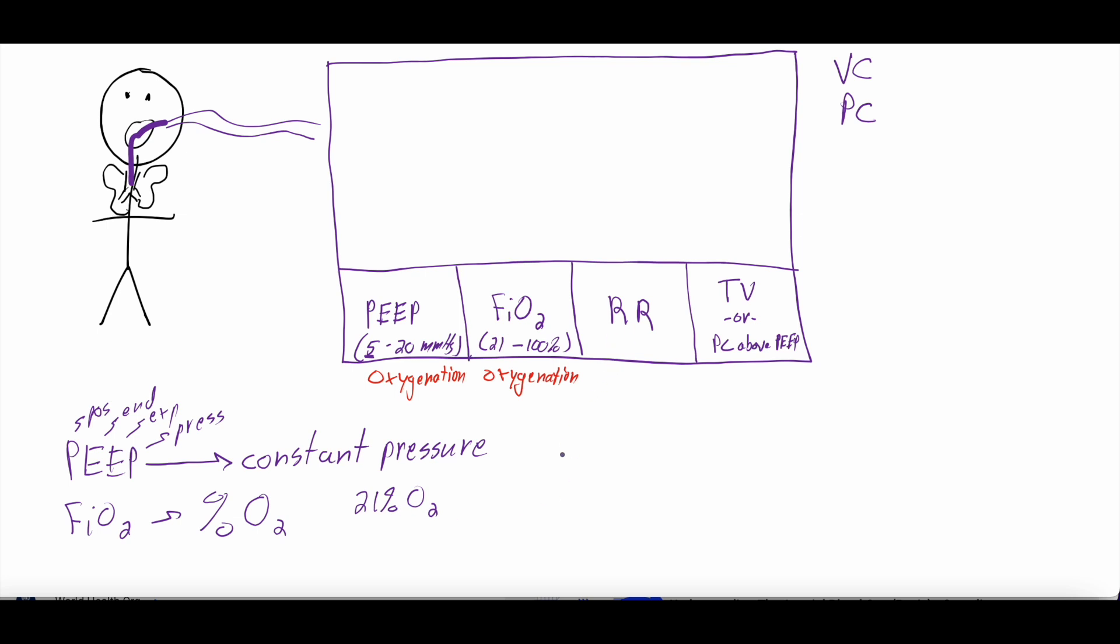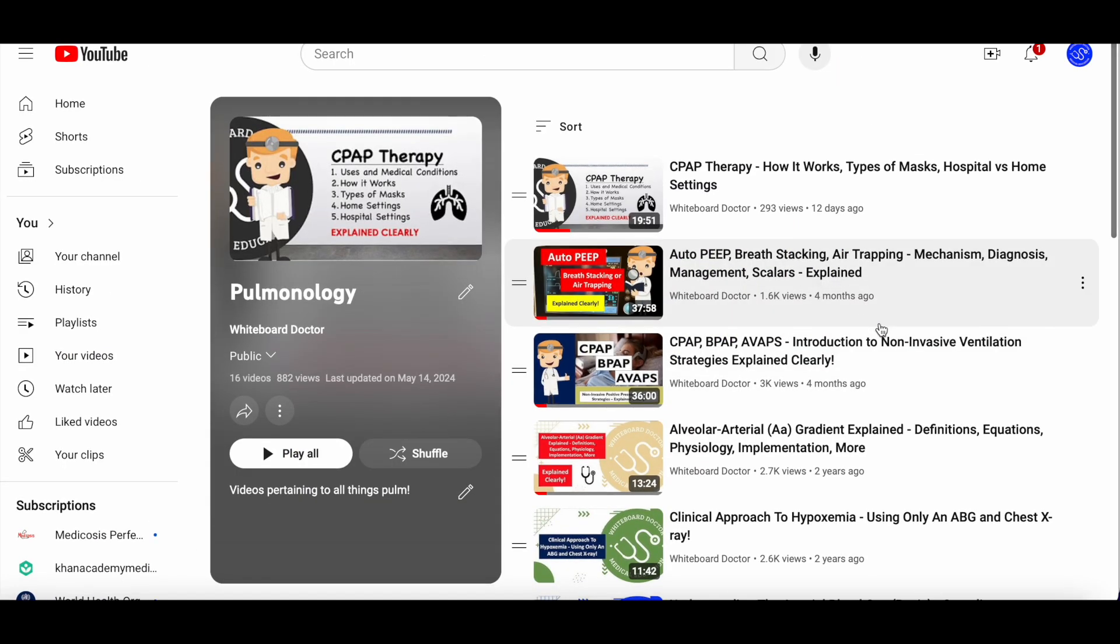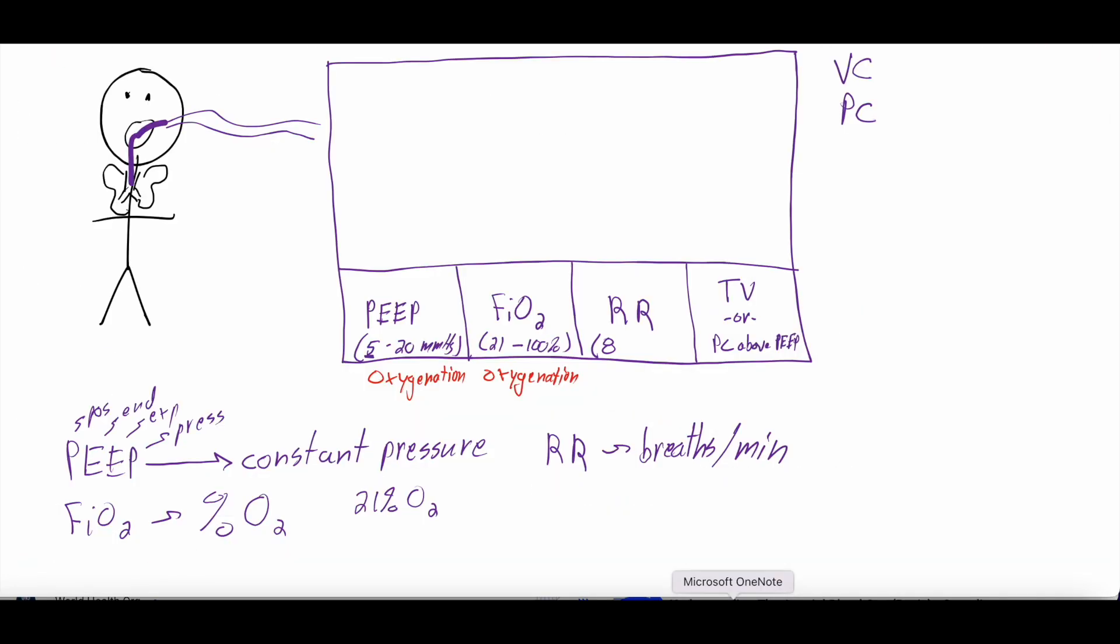All right. The respiratory rate, respiratory rate is the number of breaths you're getting per minute. So someone who's just existing out in the world is usually breathing somewhere between 12 to 16 times per minute. But you can set the respiratory rate at whatever you want. We very rarely go less than eight and even eight is incredibly low. There's some complex reasons you sometimes will go that low if someone has a very prolonged expiratory phase and breath stacking and all that kind of stuff. We actually covered that in one of the videos, auto-PEEP breath stacking air trapping.